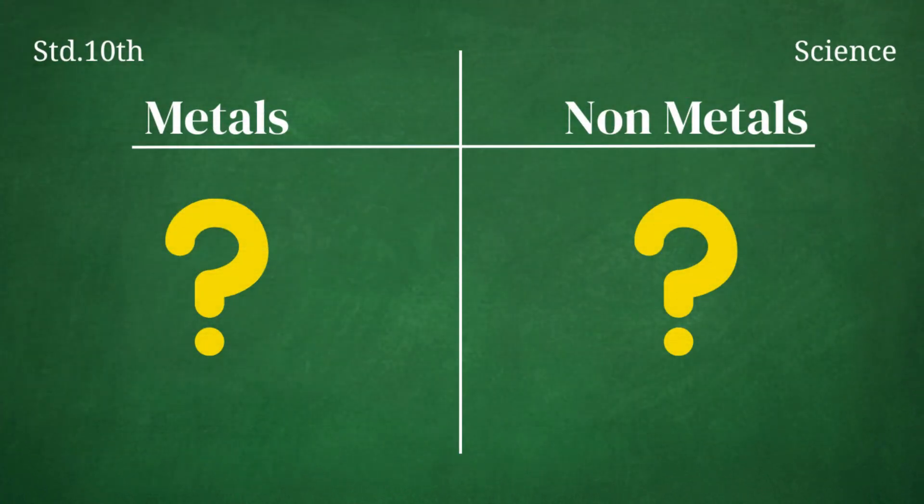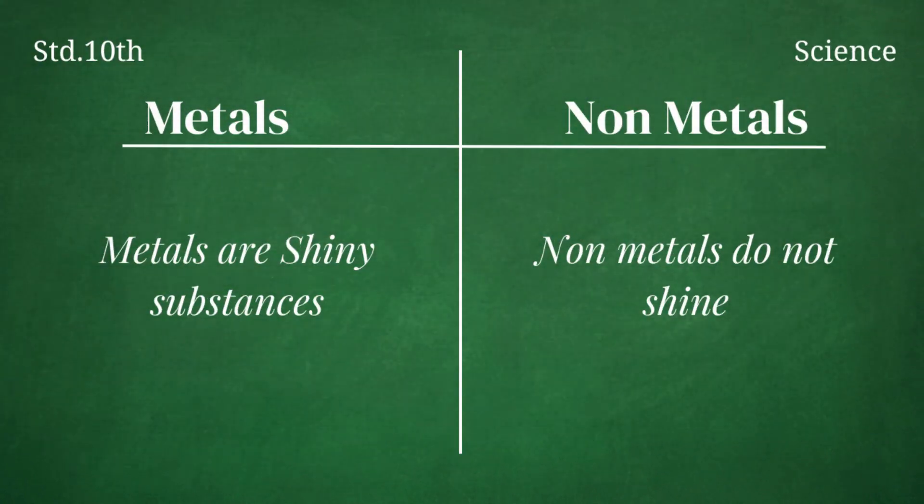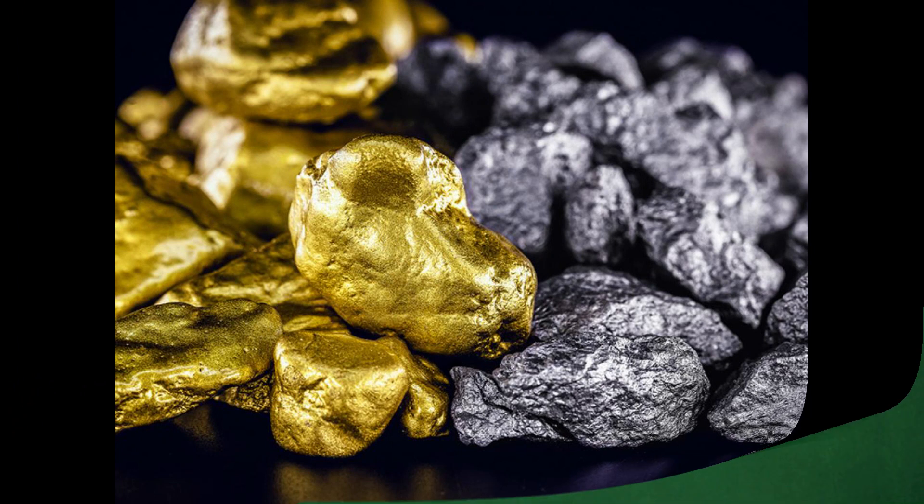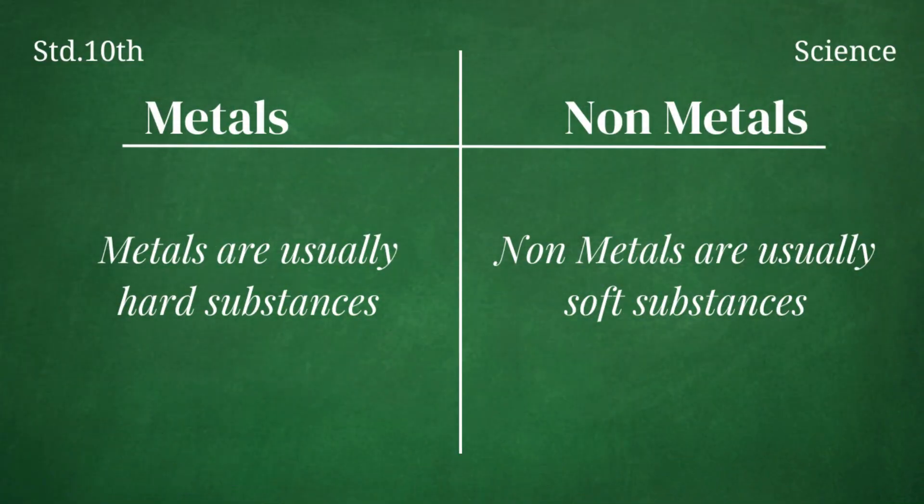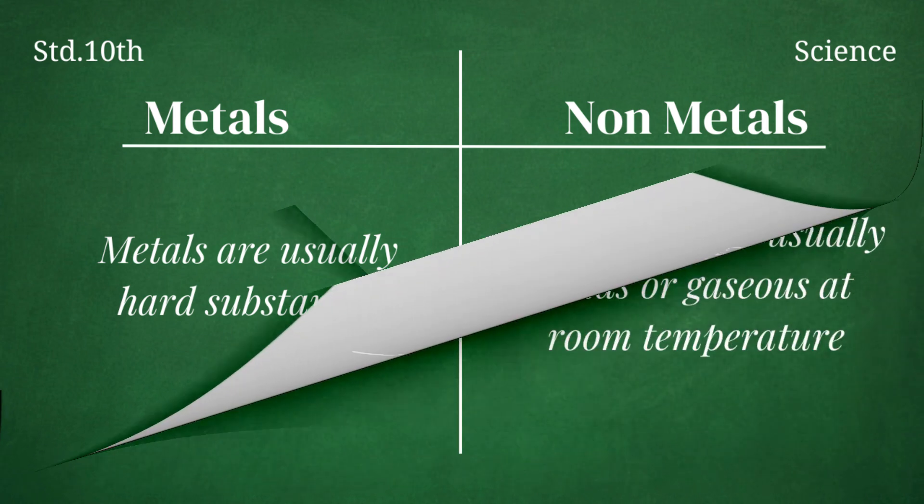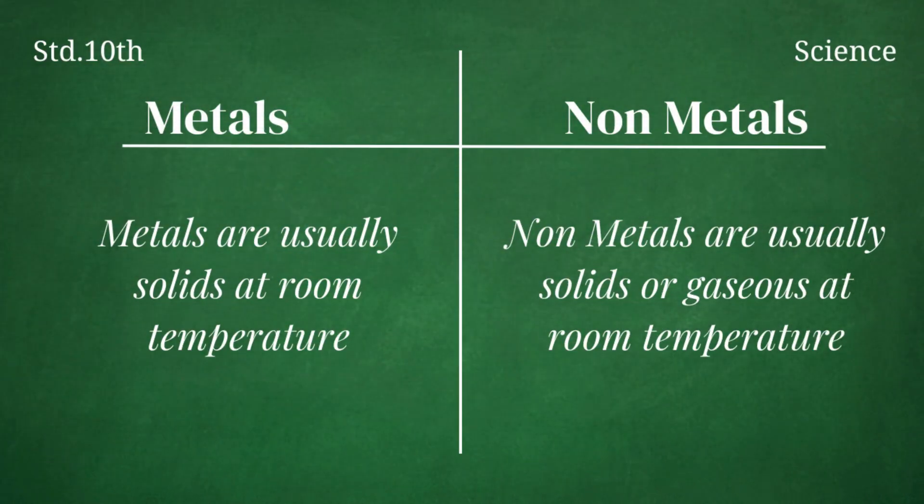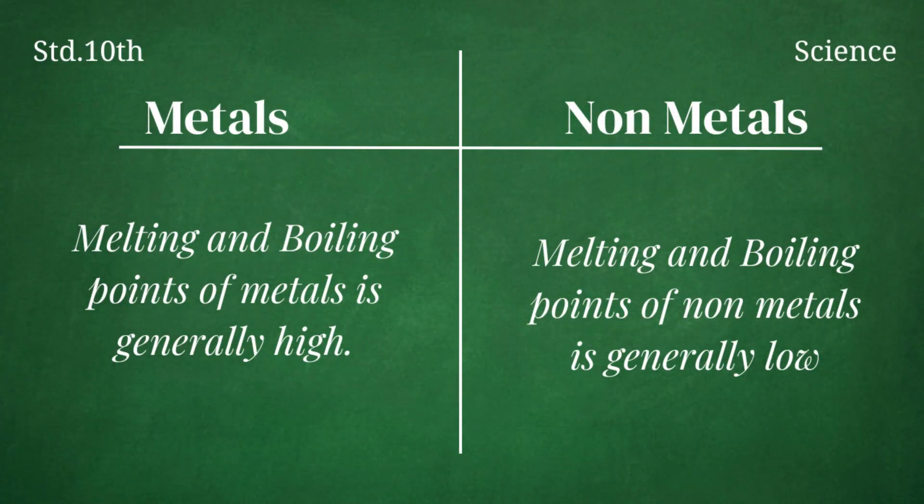Now let's check the difference between metals and non-metals. Metals are shiny substances while non-metals do not shine. Metals are hard substances while non-metals are soft. Metals are solid at room temperature while non-metals are either solid or gaseous at room temperature. Melting and boiling point of metals is quite high while melting and boiling point of non-metals is low.